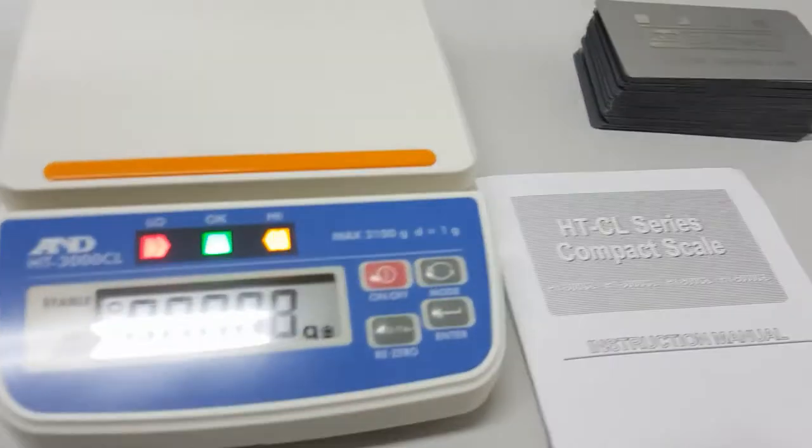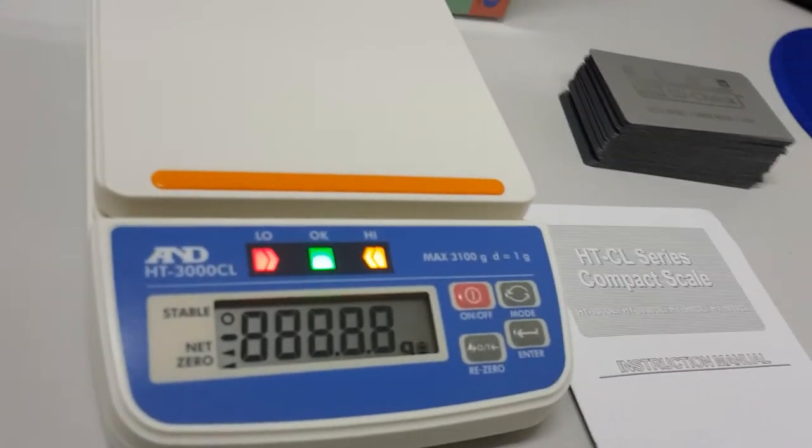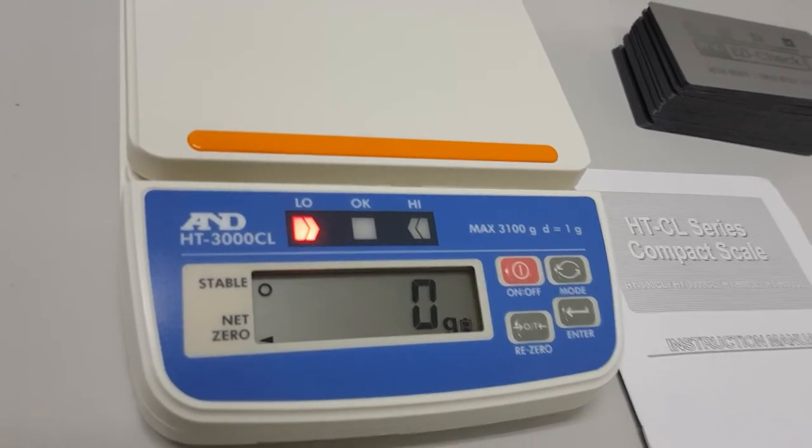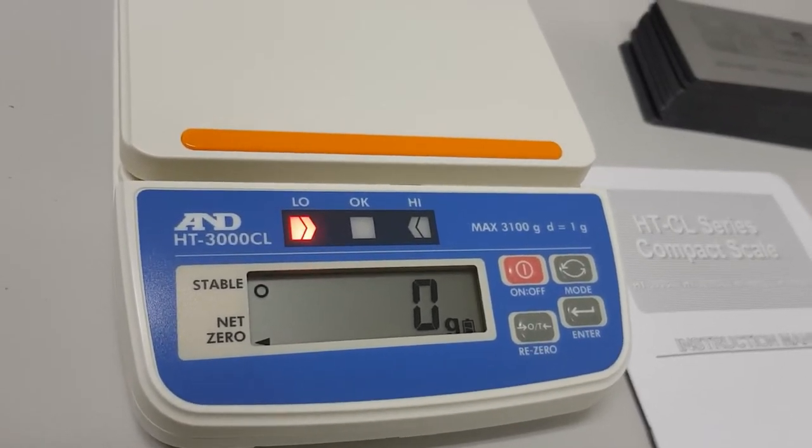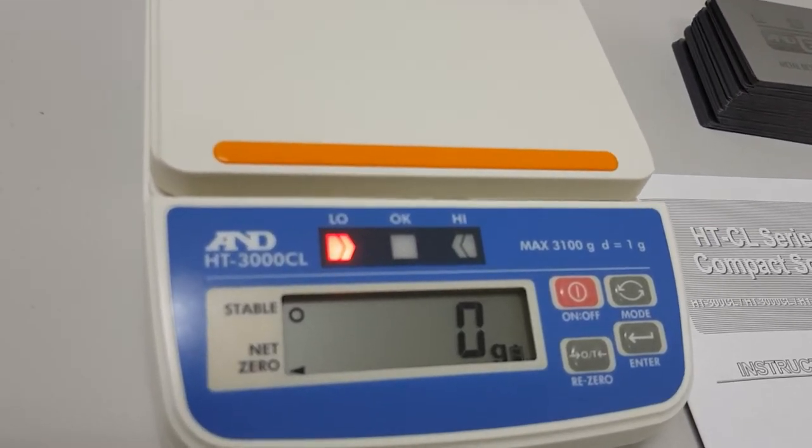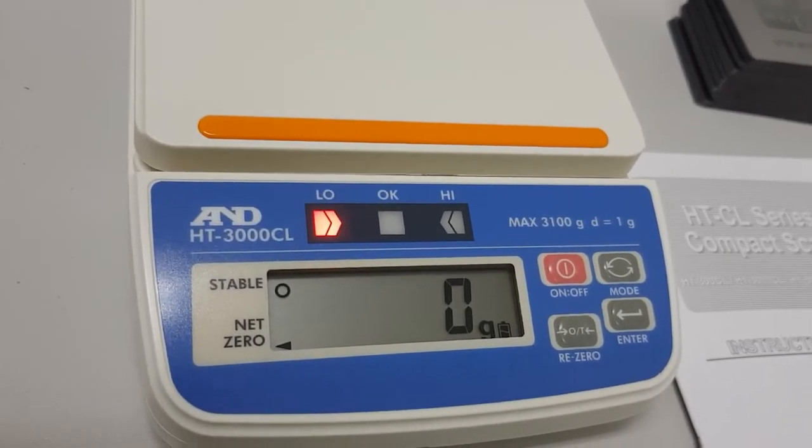When I turn this scale on it'll come on in the last program that I had it set on before I turned it off. There's actually nine sets of set point values you can save in here, so it's easy to change between different punnet sizes if you wanted to pack different packs in the one operation.